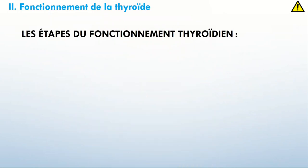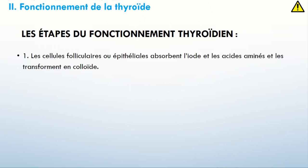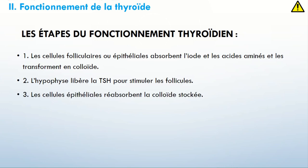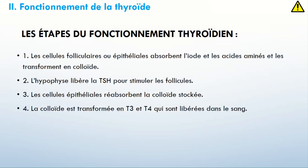Voilà les étapes du fonctionnement thyroïdien. Je les répète maintenant, et c'est à très bien retenir, ce sont des questions de cours qui se posent au test. 1 : les cellules folliculaires ou épithéliales absorbent l'iode et les acides aminés et les transforment en colloïde — elles puisent dans le sang. 2 : l'hypophyse libère la TSH pour stimuler les follicules. 3 : les cellules épithéliales ou folliculaires réabsorbent la colloïde stockée. 4 : la colloïde est transformée en T3 et T4 qui sont libérées dans le sang.